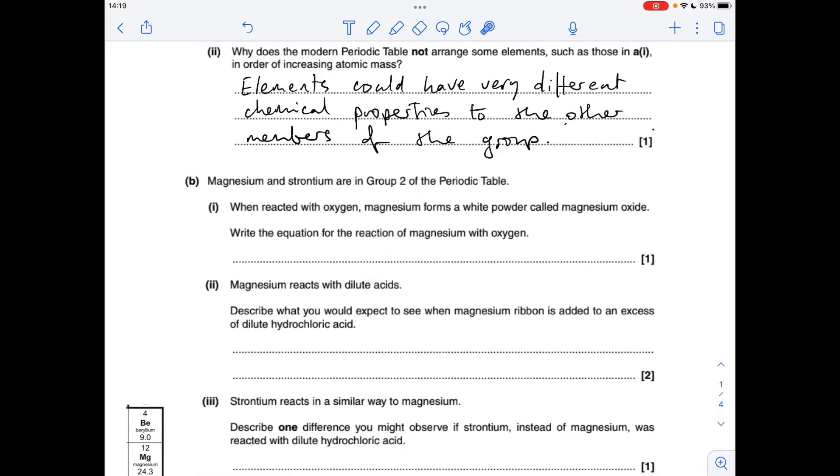And then following on from that, why does the modern periodic table not arrange some elements in order of increasing atomic mass? It's because elements could have very different chemical properties to the other members of the group.